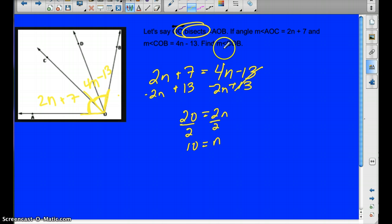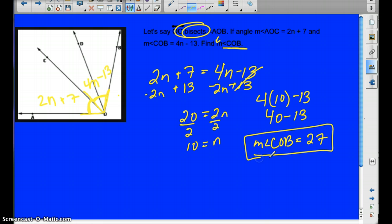But that's not what it's asking. It's asking for angle COB. And that little M, I should say, that little M means the measure of COB. Sorry, I didn't bring that up earlier. So we have 4 times 10 minus 13, which is going to be 40 minus 13. So the measure of angle COB is equal to 40 minus 13, 27. And that would be our answer.